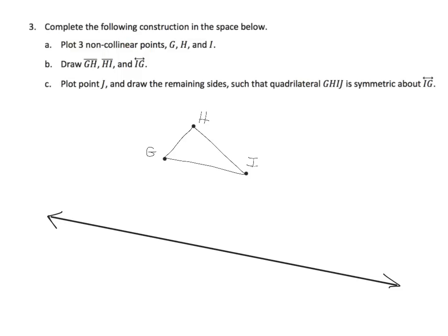Step A says plot three non-collinear points. So basically they want us to create three dots that don't form a straight line. There you go and then it says connect the dots makes a triangle. And now it says plot point J and draw the remaining sides such that the quadrilateral GHIJ is symmetric about IG. So here's our IG and so that's this line right here so I'm going to boom.